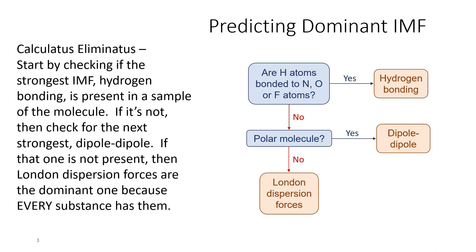The process of identifying the dominant or strongest intermolecular force can be shown by this flow chart. The idea is that since we're looking for the strongest one, let's first see if the strongest possible one — hydrogen bonding — is present. If it's not, we'll look for the next strongest, which is dipole-dipole, and then if that one's not present, by default we have London dispersion forces because they're present in all molecules.